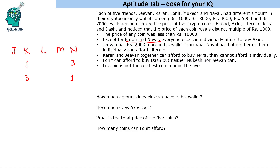Everyone else can individually buy XC. All amounts are multiples of 1000. The third lowest amount is 4000 — these two people cannot buy it but the third person can. This means the price of XC is 4000. Let us write these crypto names: EA, LTD — so XC costs 4000.